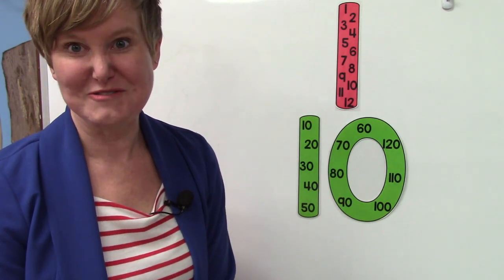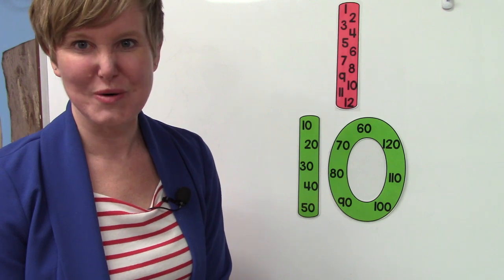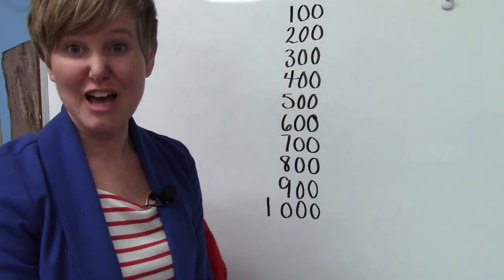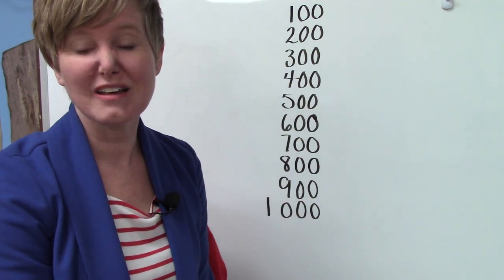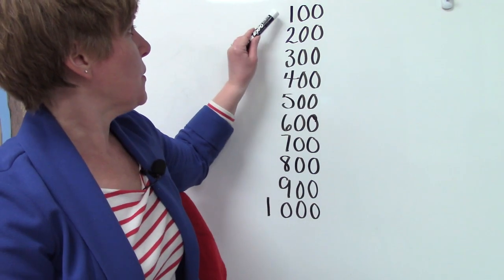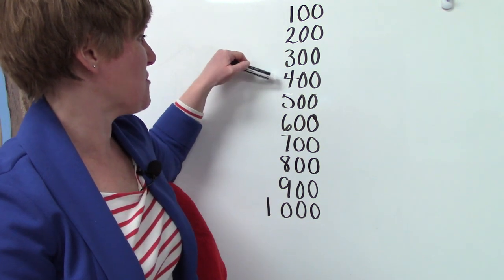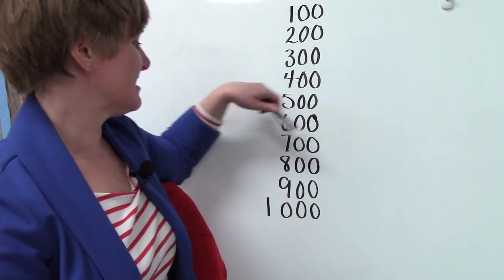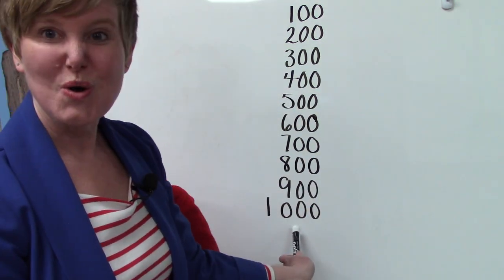I don't have one for one hundred, so I'm going to write it on the board for you. Let's look at it. I've written our skip counting by one hundreds on the board. Let's say them together. One hundred, two hundred, three hundred, four hundred, five hundred, six hundred, seven hundred, eight hundred, nine hundred, one thousand.